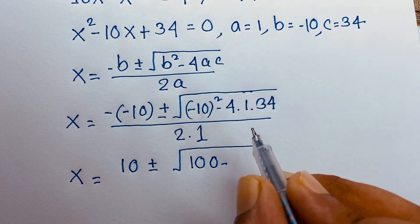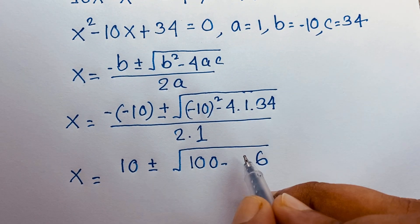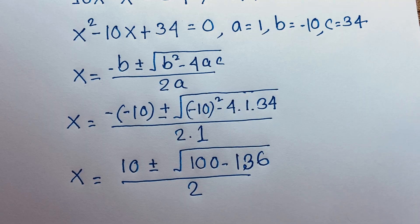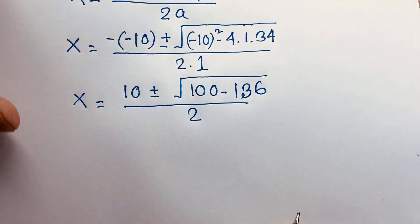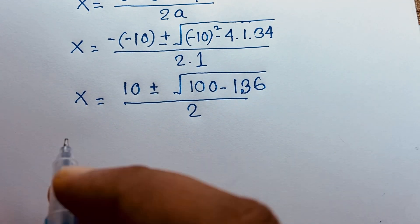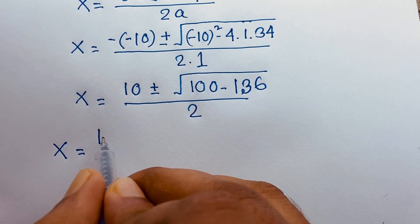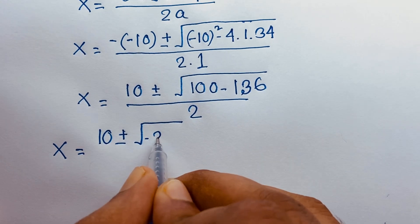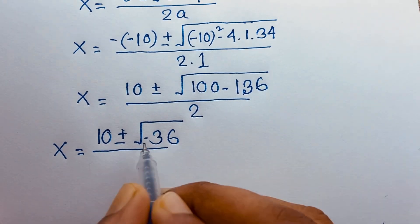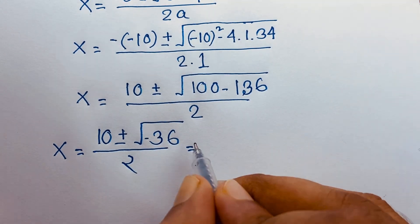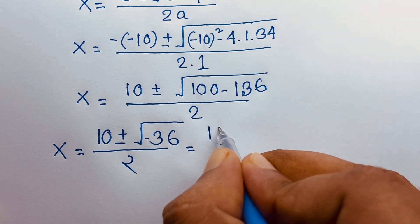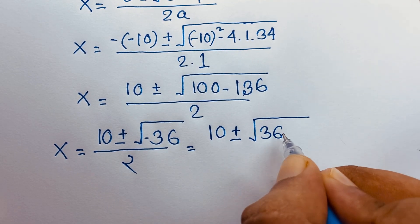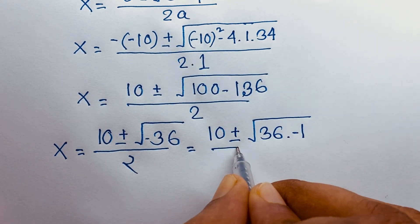4 times 34 is 136, over 2 times 1, which is 2. So x equals 10 plus or minus square root of 100 minus 136, over 2. That gives us square root of negative 36, over 2. Evaluating this expression, it will be 10 plus or minus square root of 36 times negative 1, over 2.